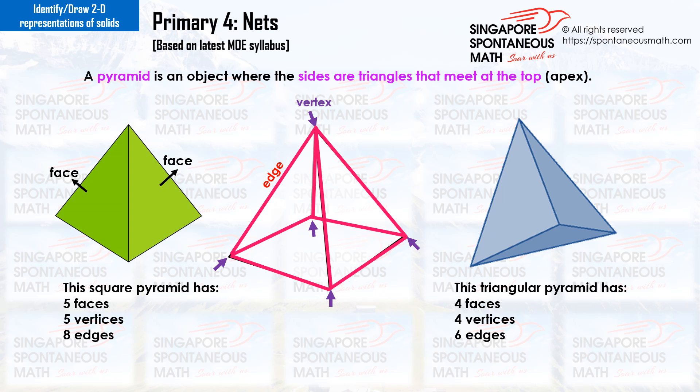A pyramid is an object where the sides are triangles that meet at the top, also known as the apex. This square pyramid has 5 faces, 5 vertices and 8 edges. This triangular pyramid has 4 faces, 4 vertices and 6 edges.